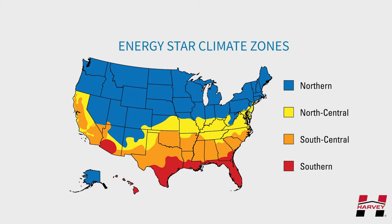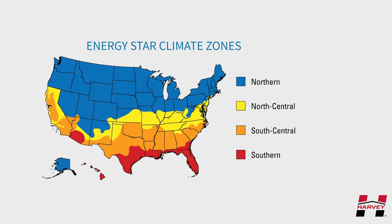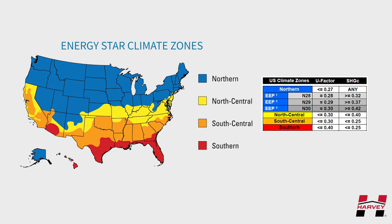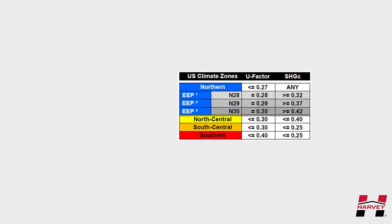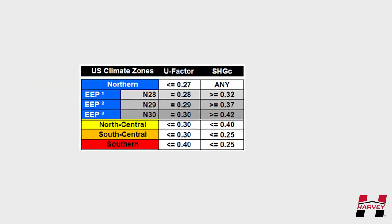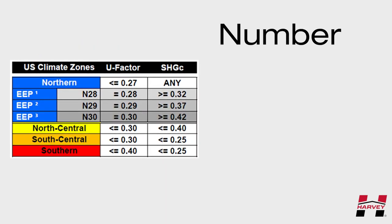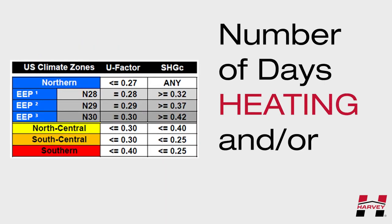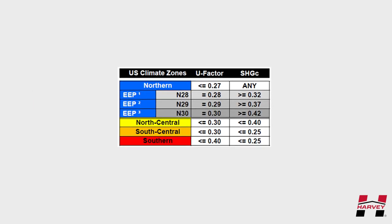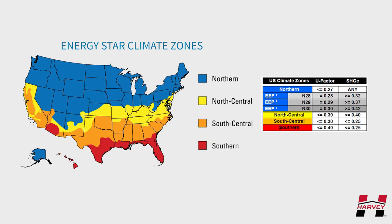The Energy Star map. Here we can see the recommended solar heat gain coefficient numbers based on geography. The numbers are based upon the number of days heating and/or cooling and is determined to be optimal for your region.